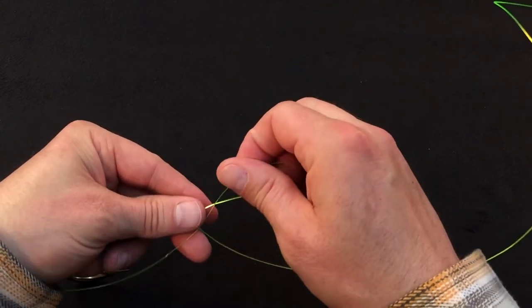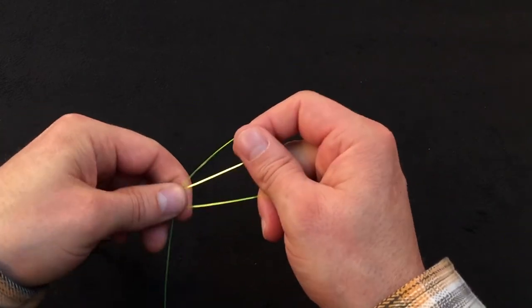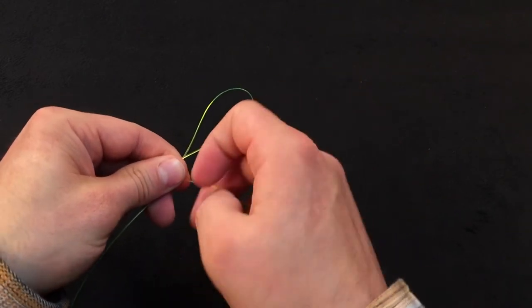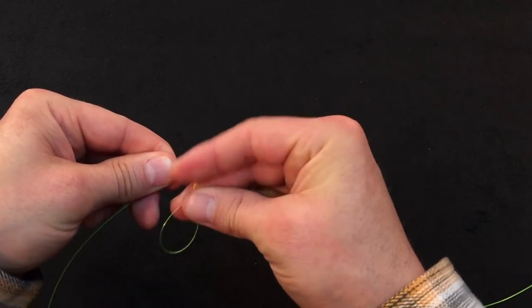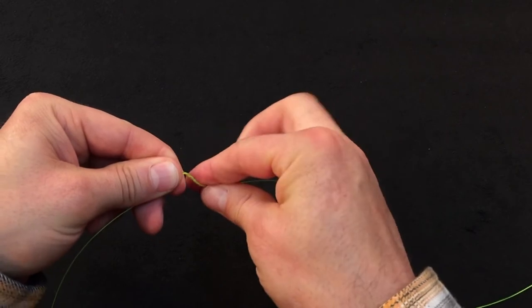Take that tag end, double it over itself and form a loop. Take that loop and you're going to wrap that around your main leader line three times. So one, two, three.